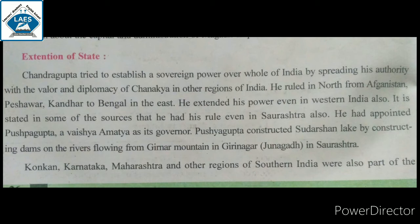Chandragupta tried to establish sovereign power over the whole of India through valor and diplomacy. He ruled from Afghanistan, Peshawar, and Kandhar in the North to Bengal in the East.